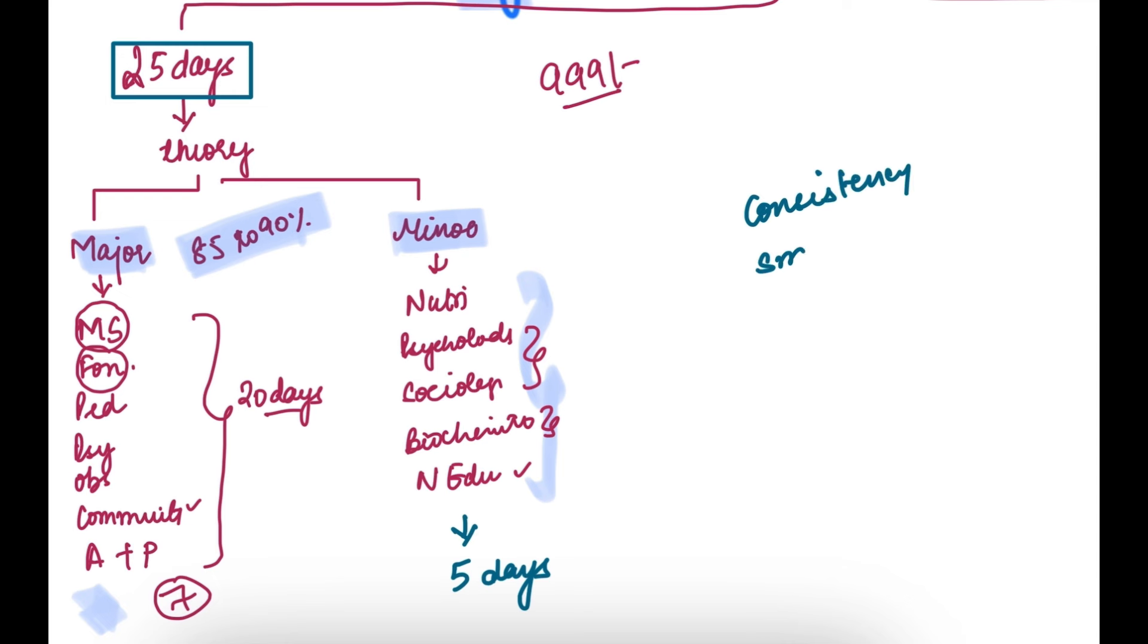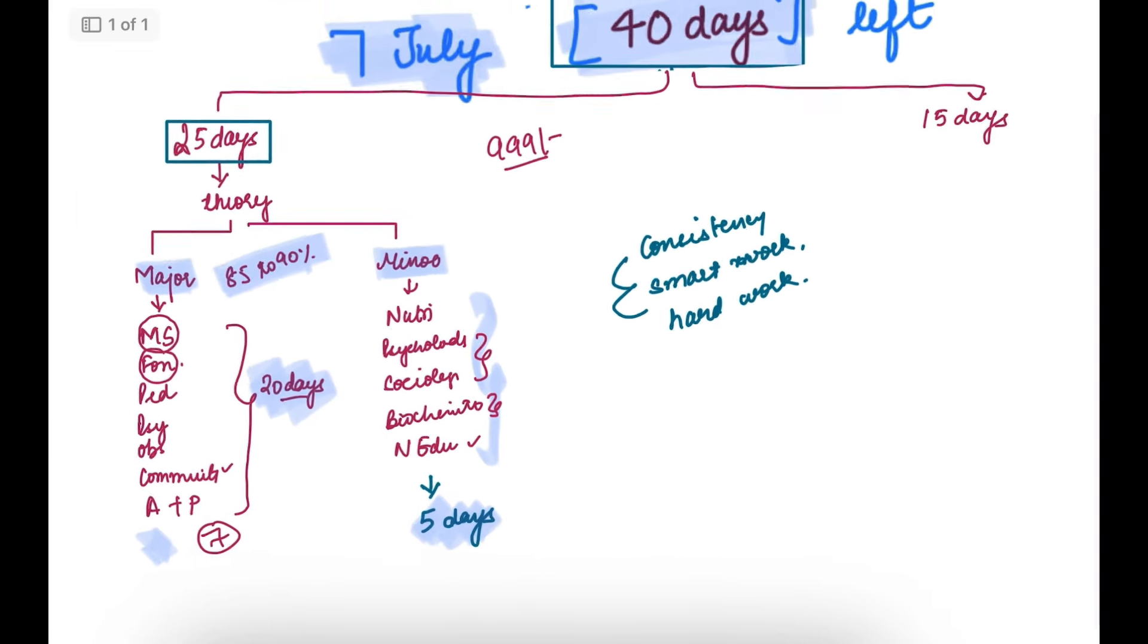At this time you have three options: first is consistency - not even one day should be wasted; second is smart work - buy as many test series and recorded batches as possible for these 40 days; and third is hard work where there's no day off, no Sundays. You need to follow these three things.